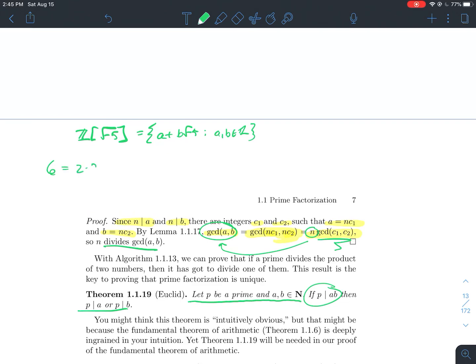So six is equal to two times three, telling you crazy stuff right now. But it's also equal to one plus root negative five times one minus root negative five. So I've got these two non-equivalent factorizations of six.